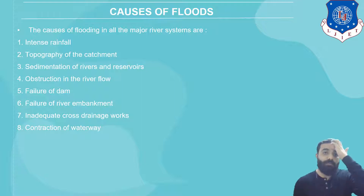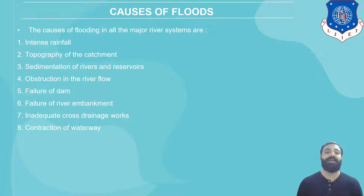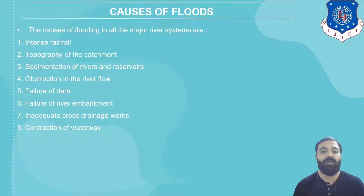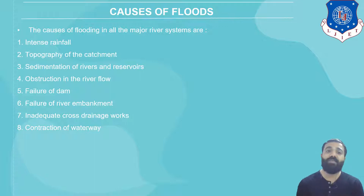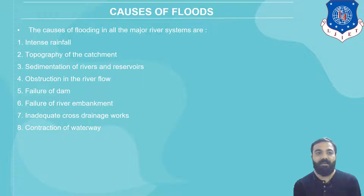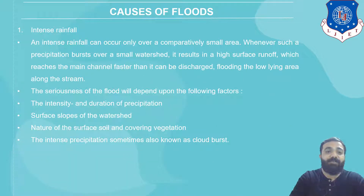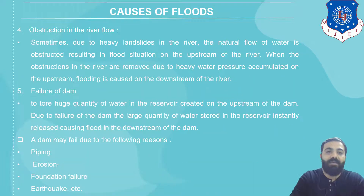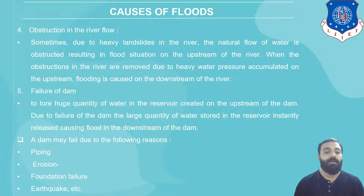There are some causes of flooding in all major river systems: intense rainfall, topography of the catchment, sedimentation of rivers and reservoirs, obstructions in the river flow, failure of dams, failure of river embankments, inadequate drainage works, and concentration of water. Other causes of dam failure include piping, erosion, foundation failure, and earth collapse.